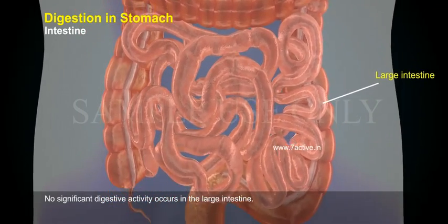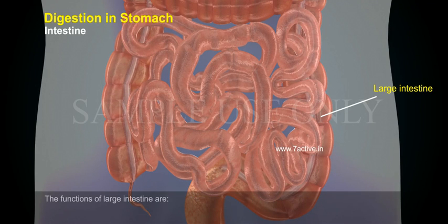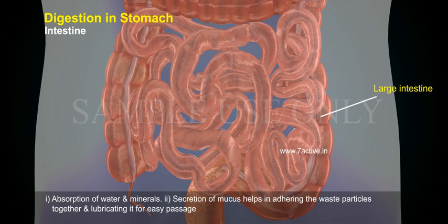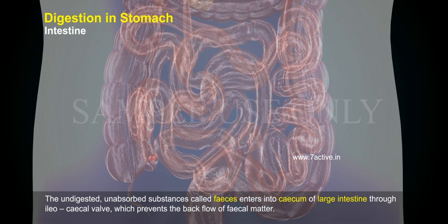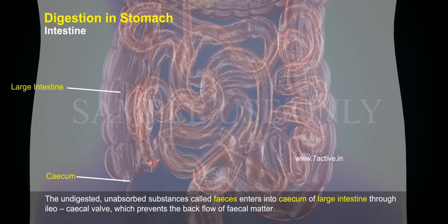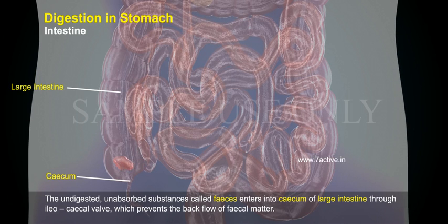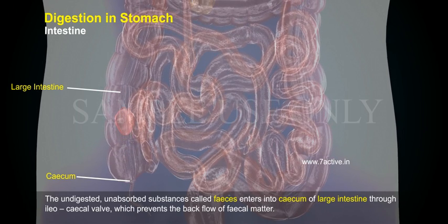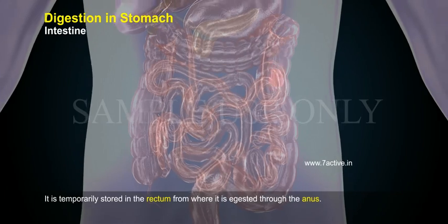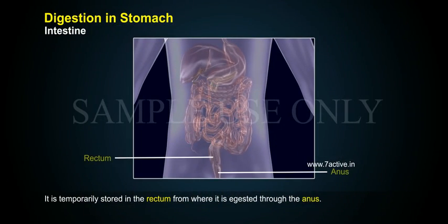No significant digestive activity occurs in the large intestine. The functions of the large intestine are: 1. Absorption of water and minerals. 2. Secretion of mucus, which helps in adhering waste particles together and lubricating them for easy passage. 3. The undigested and unabsorbable substances, called feces, enter the cecum of the large intestine through the ileocecal valve, which prevents the backflow of fecal matter. 4. Feces are temporarily stored in the rectum, from where they are expelled through the anus.